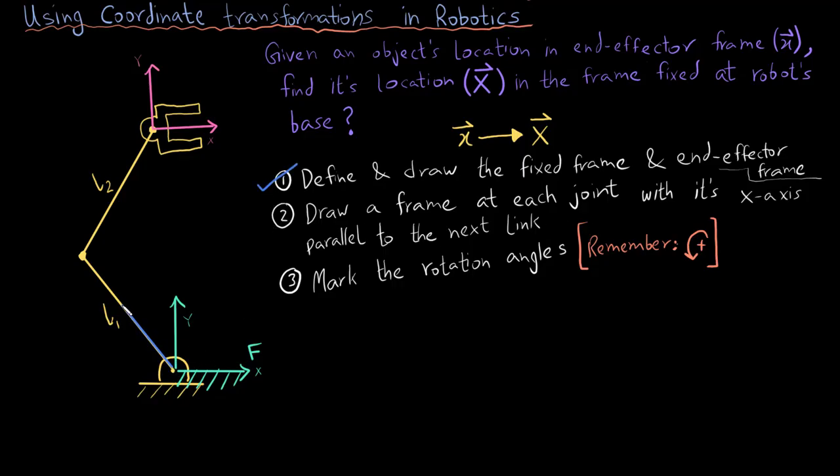Moving to the second step, I am drawing the first frame M1. Notice that the x-axis of M1 is parallel to the first link and theta one is from the x-axis of the fixed frame to the x-axis of the M1 frame.